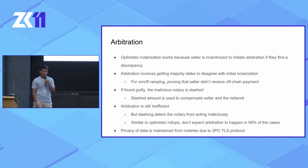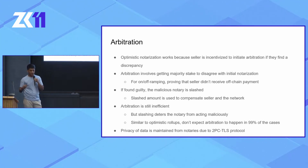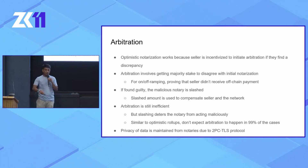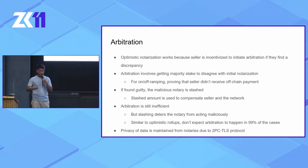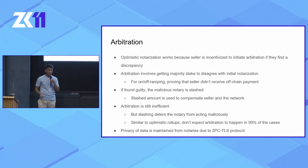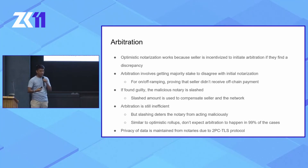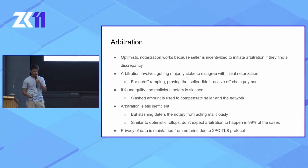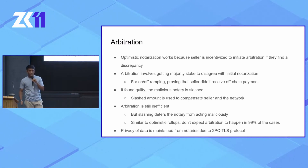Optimistic notarization works because we have another party — the seller — who is incentivized to initiate the arbitration process if they find a discrepancy. Arbitration involves getting a majority of the stake in the network to disagree with the initial notarization. For on-off ramping, that means the seller proving they did not receive the off-chain payment the buyer claims to have sent. If the initial notarization is found to be wrong, that malicious notary is slashed, and the slashing amount compensates both the seller and the network. This is very similar to optimistic rollups, and we expect arbitration to not happen in 99% of cases — there has only been one fraud proof submitted across all optimistic rollups, and that was on testnet, not mainnet.